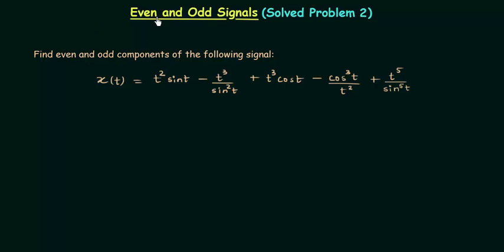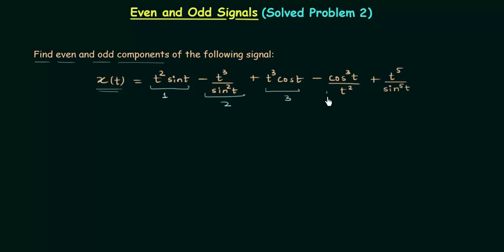Let's solve another problem based on even and odd signals. We need to find the even and odd components of signal x(t). The five terms are: t² sin(t), t³/sin²(t), t³ cos(t), cos³(t)/t², and t⁵/sin⁵(t). We need to find the even component and the odd component.